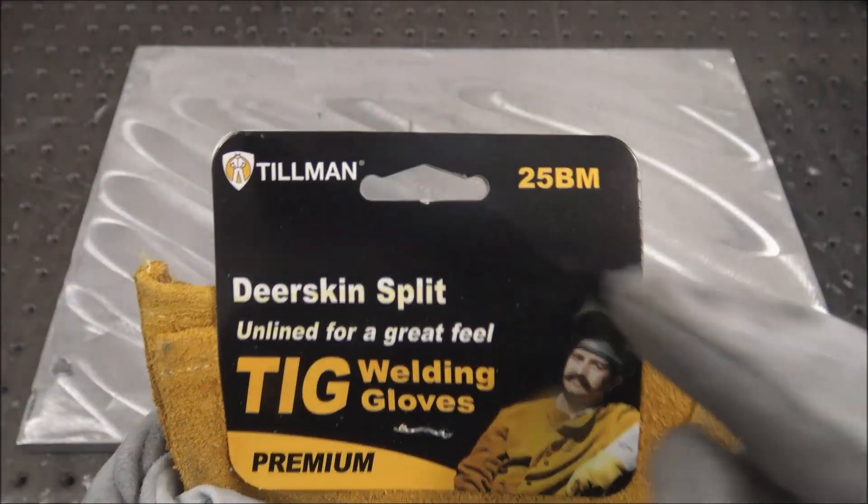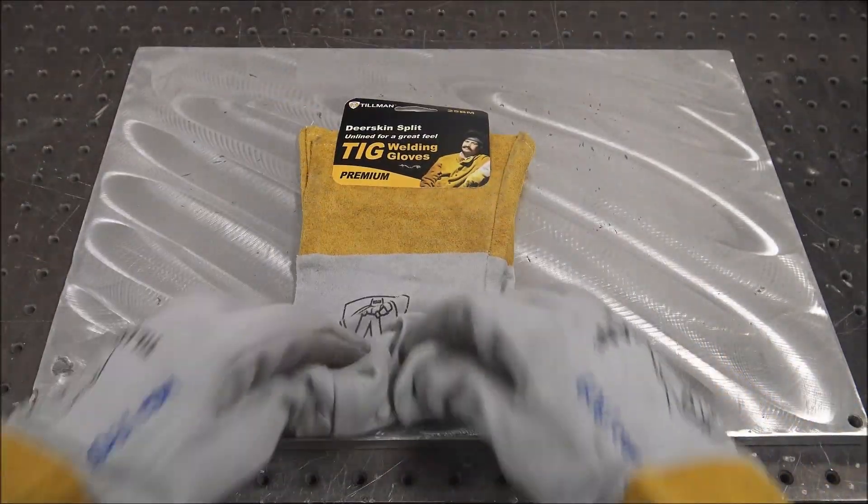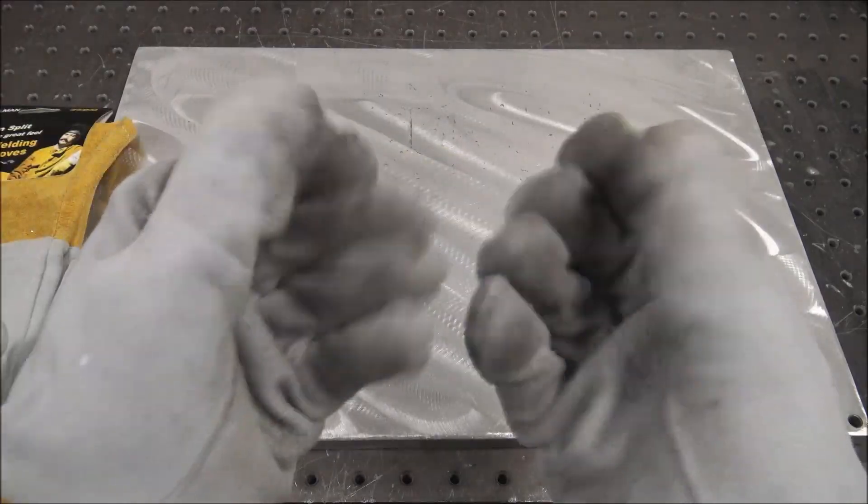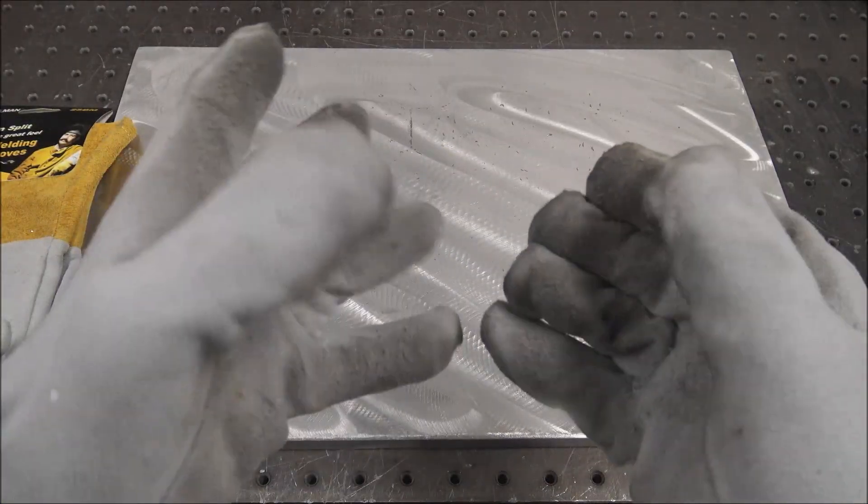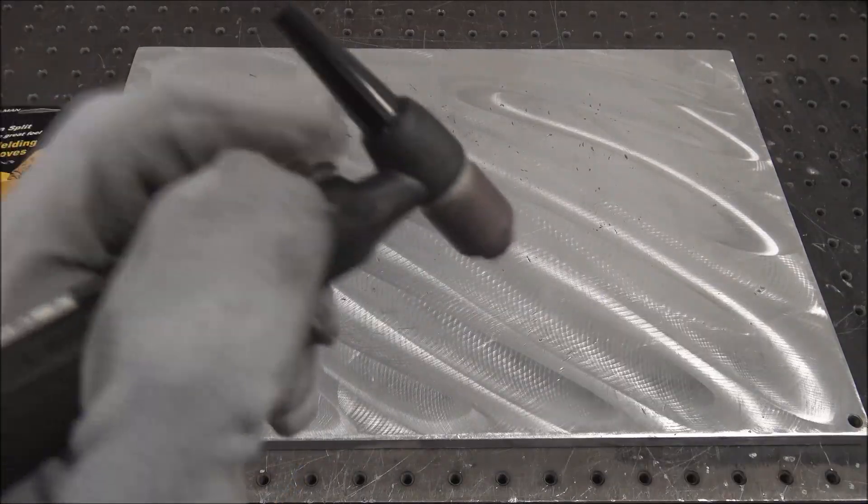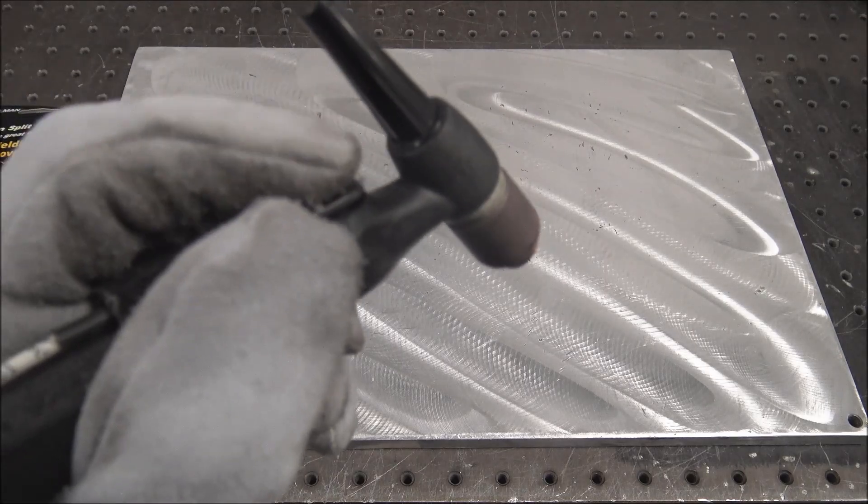25B Tillman's—the M stands for medium, that's the size I wear. The reason I like these gloves is they're very supple. You can feel what you're doing with them. They're not very durable for grinding, they'd wear out pretty quick. But for TIG welding, you can feel exactly what you're doing with the torch handle and the TIG button.